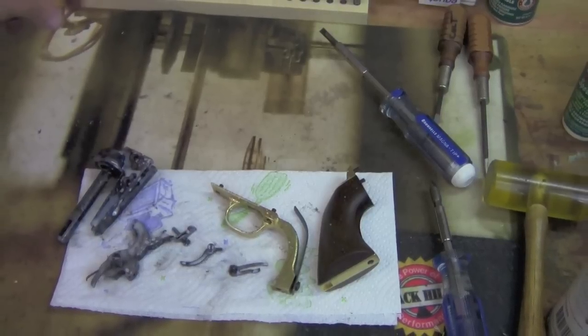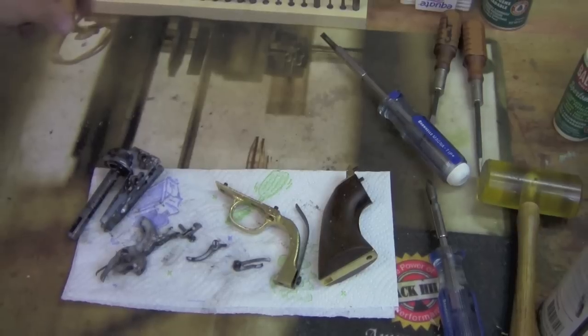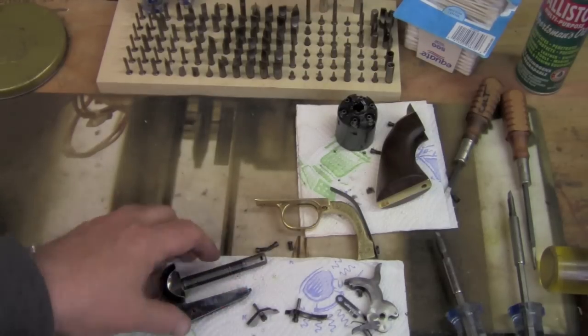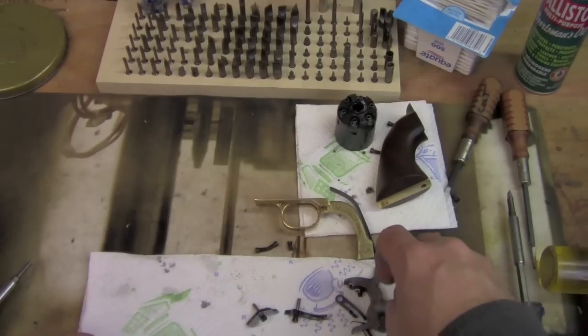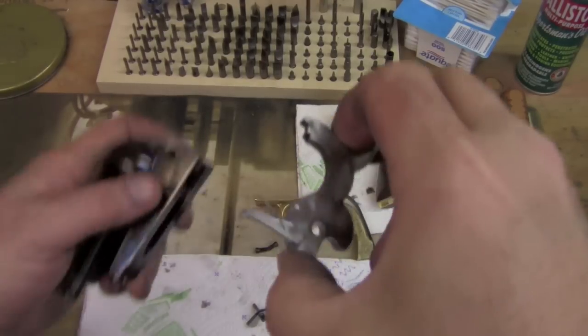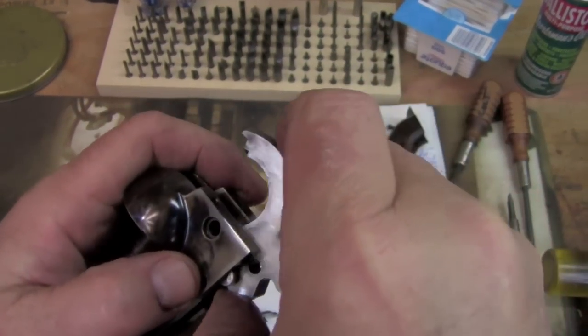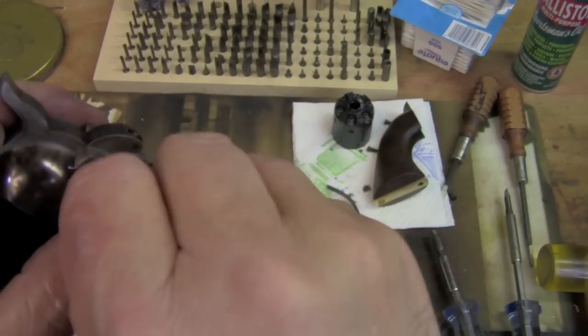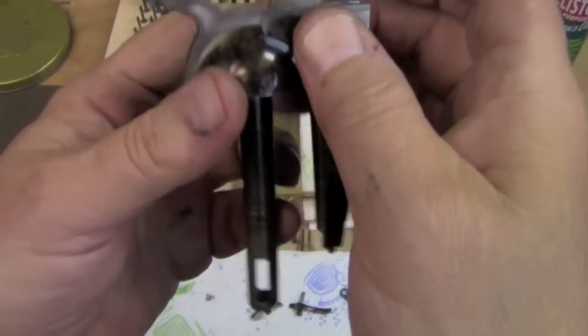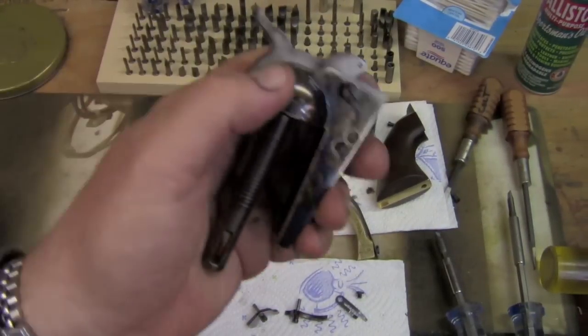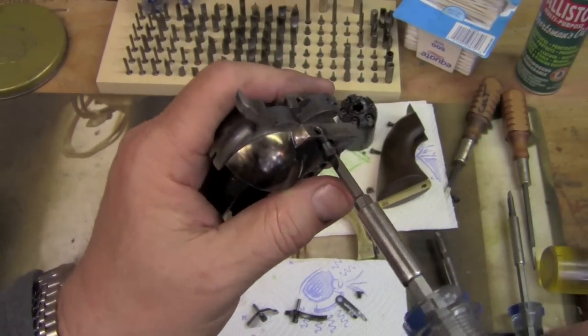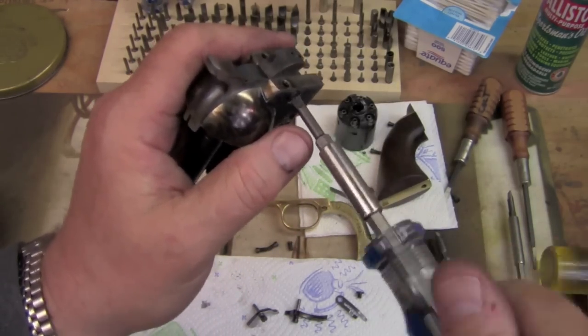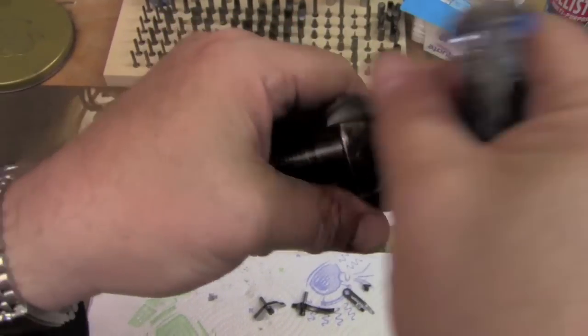Off camera, I took a rag and cleaned all the fouling off the action parts. So now they're cleaned and ready to be reassembled. Alright, it's time to put the action back together. And we're going to start with the hammer and the hand. So they're going to kind of go in together, right? We want to get the hand going into its slot and get the hammer so that it lines up with the screw hole. And then we just get the screw in and we'll screw in. And we're good, right?